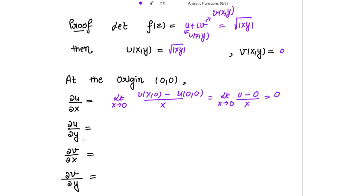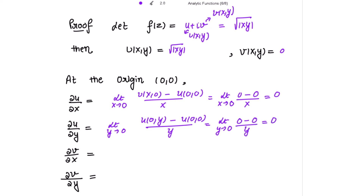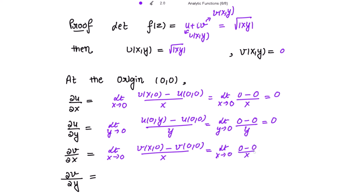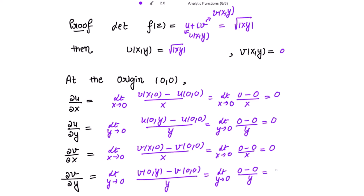Then ∂u/∂y is limit as y→0 of [u(0,y) − u(0,0)] / y. Putting x = 0 in u(x,y) gives 0, and u(0,0) = 0, so this equals 0. Similarly, ∂v/∂x = limit as x→0 of [v(x,0) − v(0,0)] / x. Since v(x,y) = 0, this is 0 − 0 over x = 0. And ∂v/∂y = limit as y→0 of 0 − 0 over y = 0.